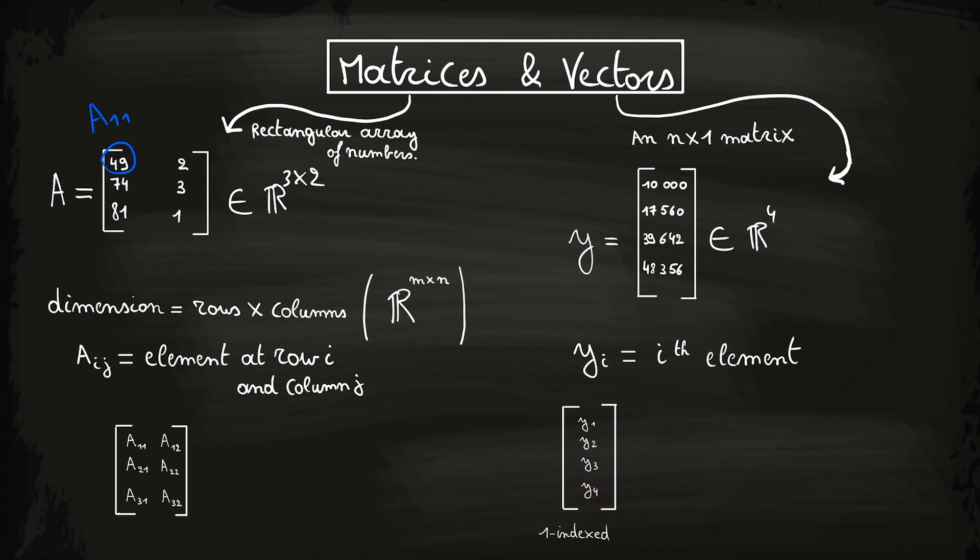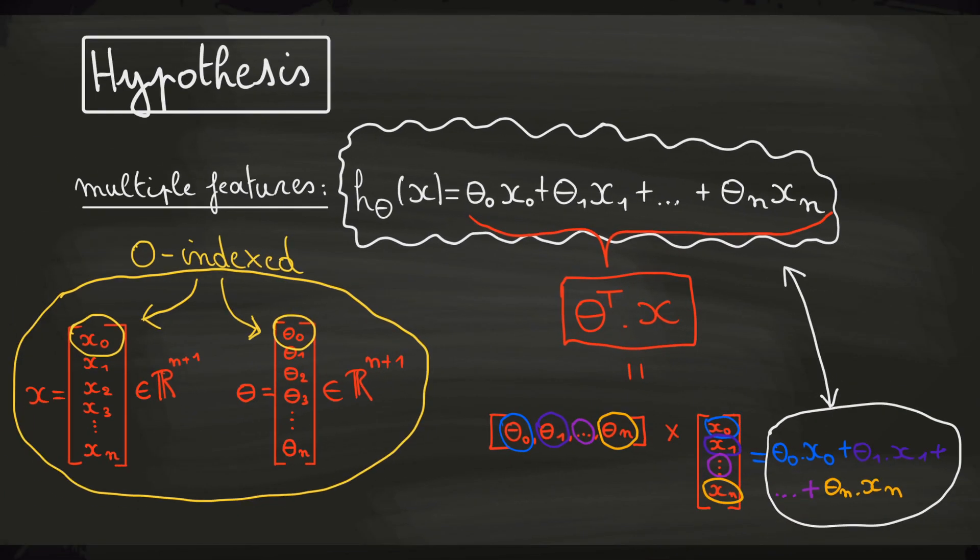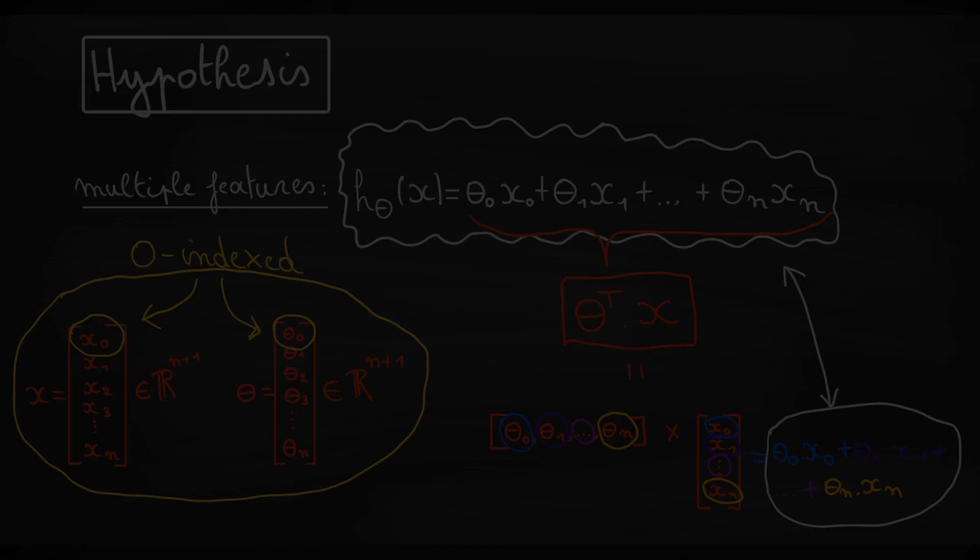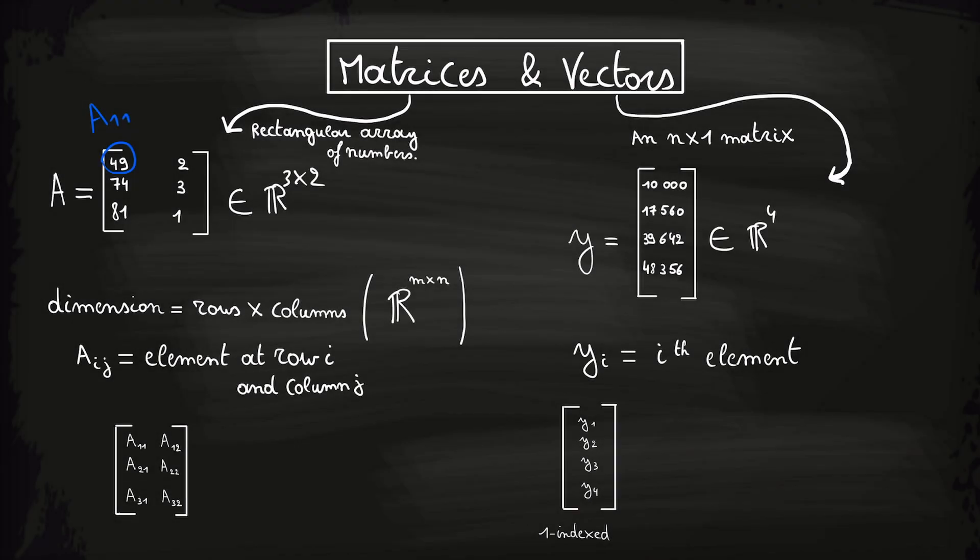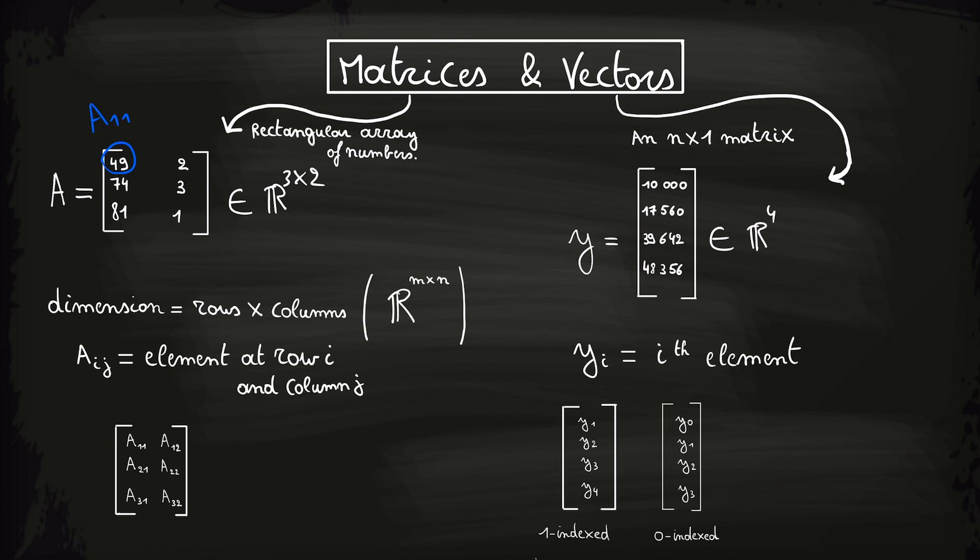However, if you remember from the previous video, our hypothesis looked like this, with x subscript 0 and theta subscript 0. That's why in machine learning we mostly choose for 0-indexed vectors, where we start our indexing from 0 up until n-1.